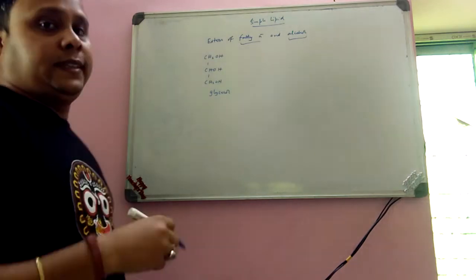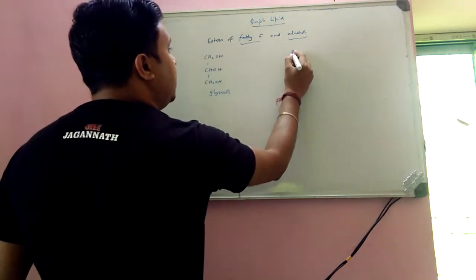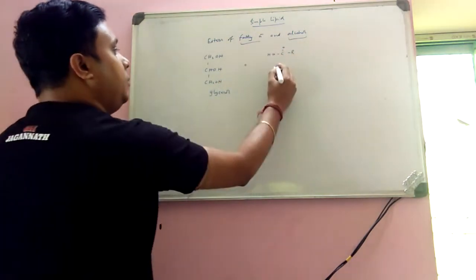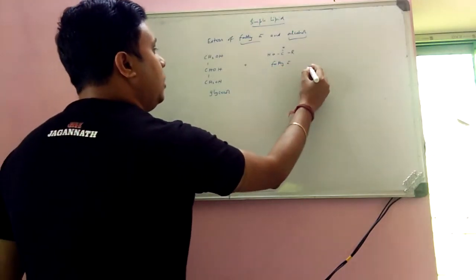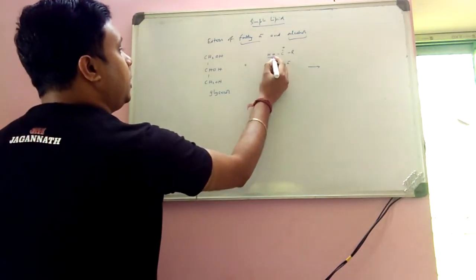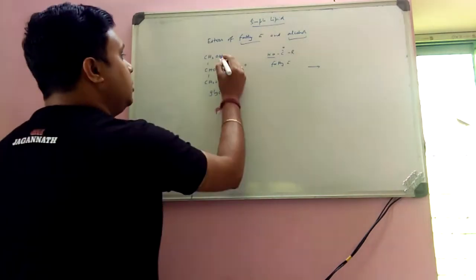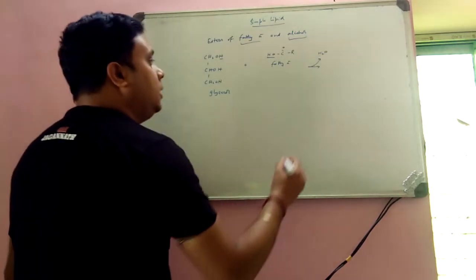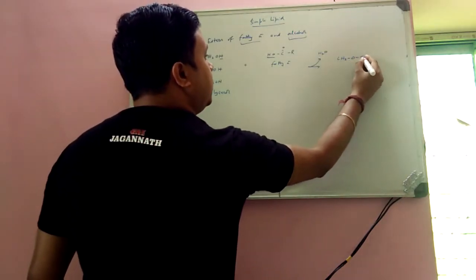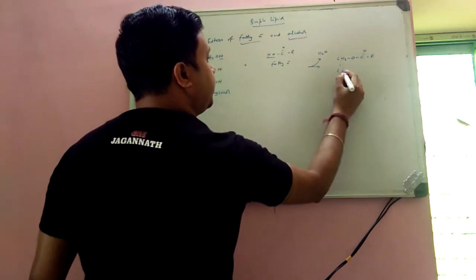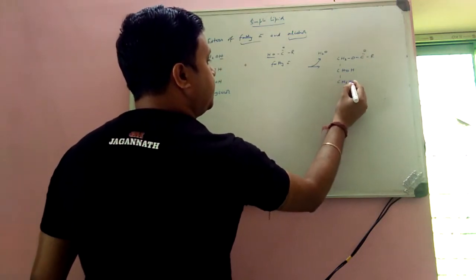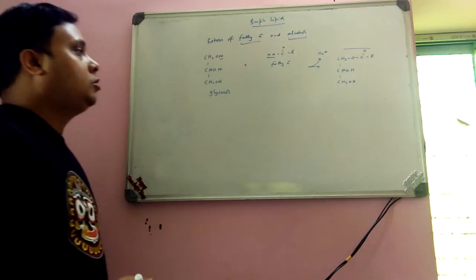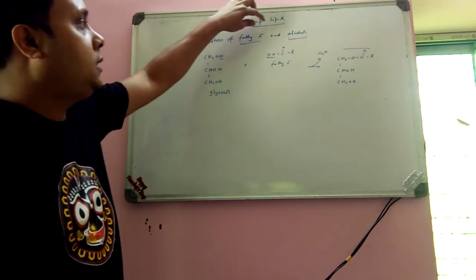You need to combine fatty acids with glycerol. The general structure of fatty acid is R-COOH. So if we add glycerol plus fatty acid, one molecule of water will get eliminated from there, resulting in the formation of an ester. We have written that simple lipid is the ester of fatty acid and alcohol — this is the alcohol molecule, this is the fatty acid, and ester formation results.